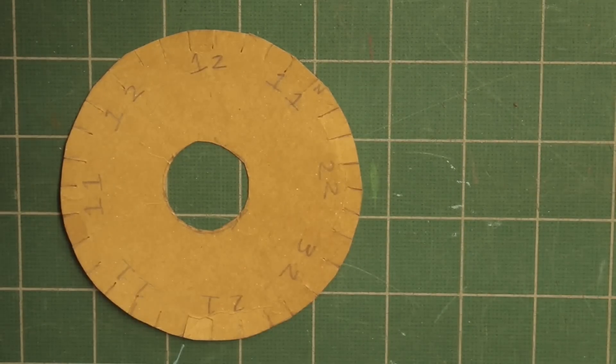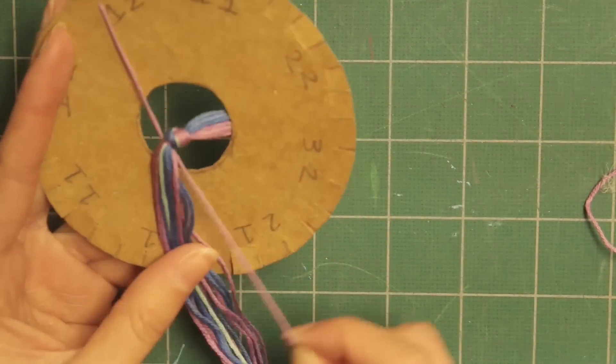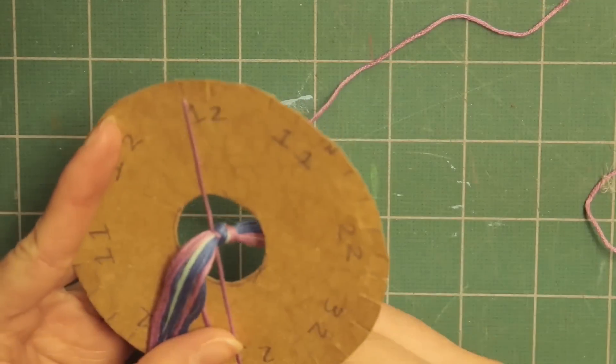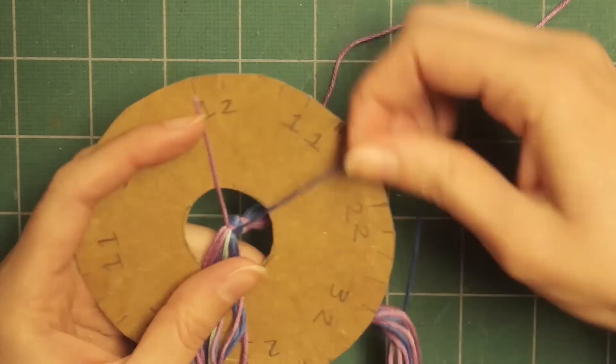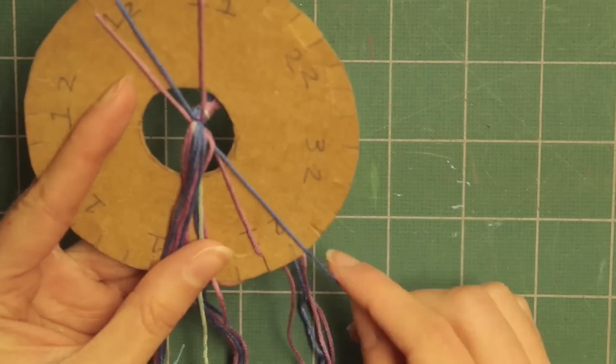Now we're going to start the braiding. So just put each of the strands into the right slot. And it doesn't really matter what order you do this in. Just put the ones in the one slot, the twos in the two slot, and the three in the three slot.